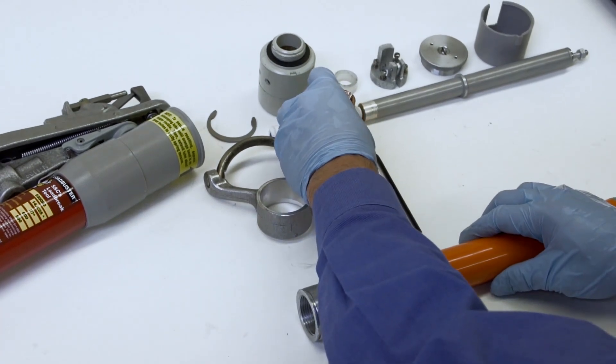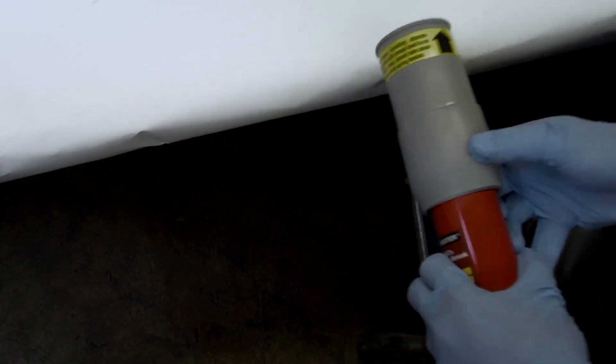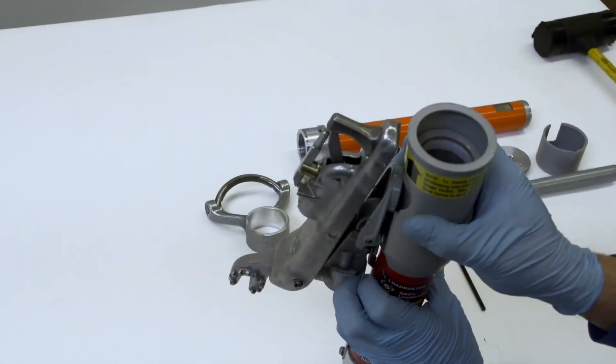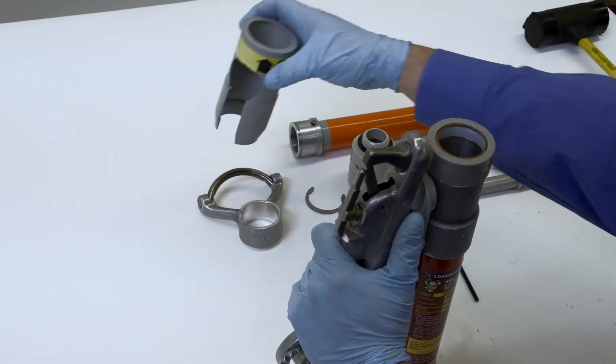Remove the chassis cover by prying the cover equally on both sides and sliding it off the chassis. This can be tricky, so make sure to brace the tool on your workbench to avoid slipping when removing the chassis cover.